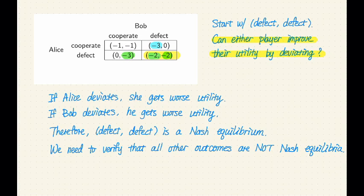But to answer this question fully, we also have to verify that all three other outcomes are not Nash equilibrium. Let's do this.